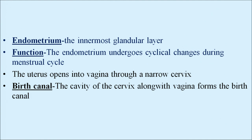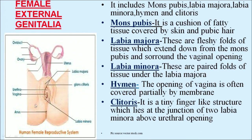The uterus opens into the vagina through a narrow cervix. The cavity of the cervix along with the vagina forms the birth canal, through which the child comes out, which is why it is called the birth canal. Female external genitalia includes mons pubis, labia majora, labia minora, hymen, and clitoris.